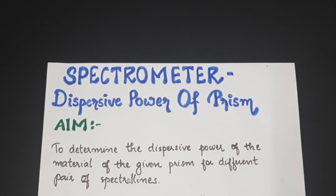In this experiment with spectrometer, we are going to determine the dispersive power of the material of the given prism for different pairs of spectral light.